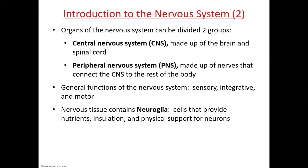There are three main functions of the nervous system: sensory, integrative, and motor. Sensory picks up sensations from the environment — internal or external. Integrative decides what to do with those signals, and motor carries that decision out to the effector organ. Nervous tissue also contains neuroglia — a general name for all other cells in nervous tissue that support neurons by providing nutrients, insulation, and physical scaffolding.